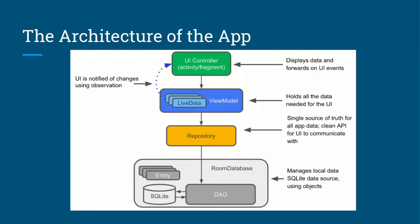Now let's look at the architecture of the application. This is the recommended architecture when using Room Database in your application. When you want to write robust code, you should follow this architecture. We have a UI controller, a ViewModel, a Repository, and then the Room Database — all interconnected to make our application function.